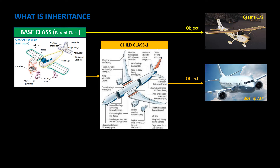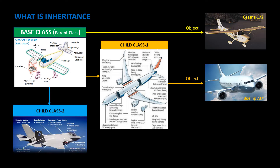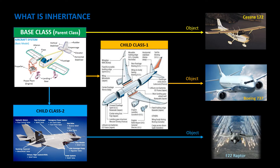Similarly, the child class 2 inherits all basic properties from the base class and adds on its own advanced features to create the blueprint of a fighter jet aircraft. Based on the inherited and modified features of child class 2, we develop a real world fighter aircraft, the F-22 Raptor.